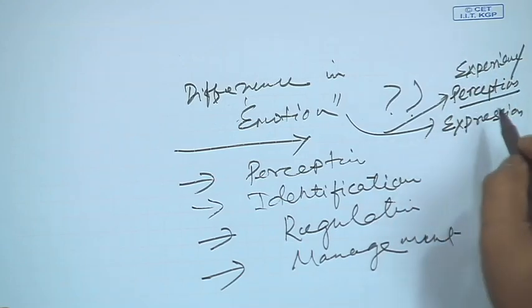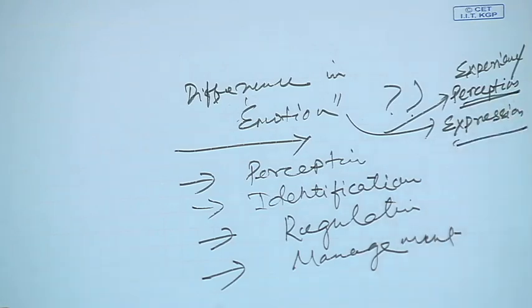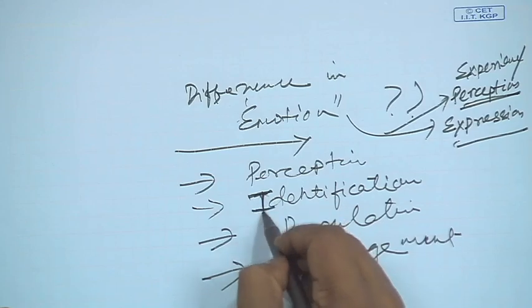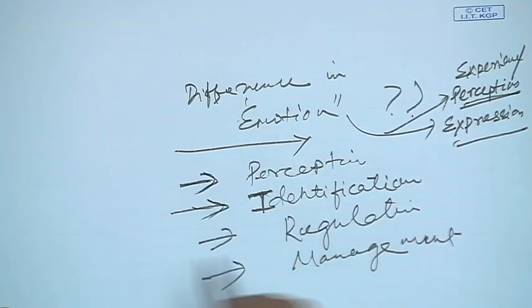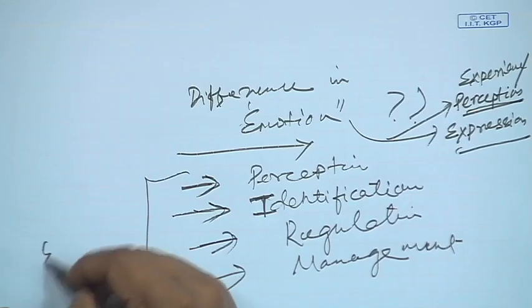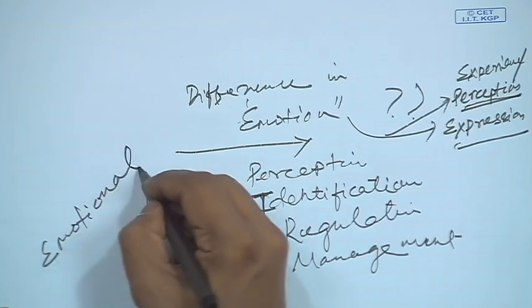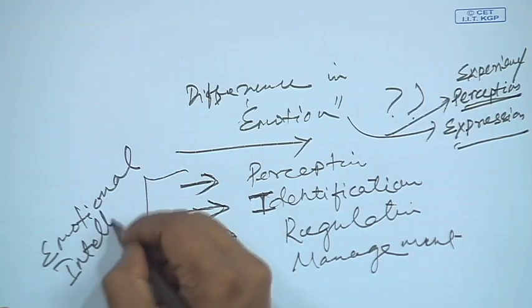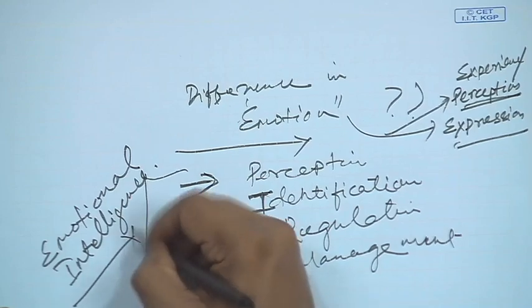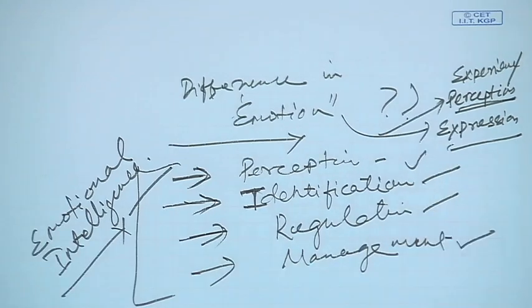When we examine these four dimensions — perception, experience, and expression — they directly pertain to the domain of emotional intelligence. As we all know, emotional intelligence is nothing but the perception, regulation, and management of one's emotions in self and others. So the central theme remains within the purview of perception, identification, regulation, and management.